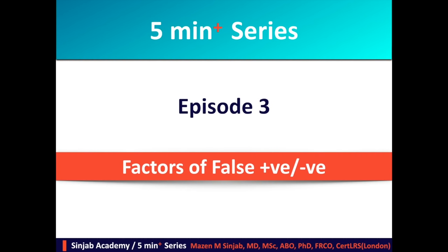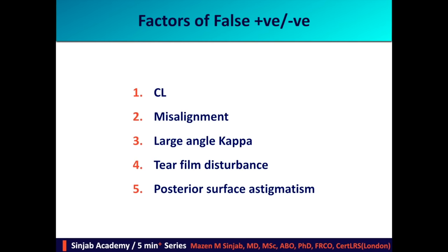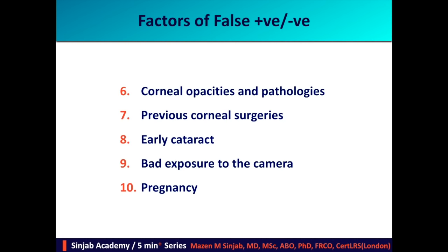However, before you do the same, you have to listen very carefully to this video and you have to know the factors of false positives and false negatives in corneal tomography. The factors are: contact lenses, misalignment, large angle kappa, tear film disturbance, posterior surface astigmatism, corneal opacities and pathologies, previous corneal surgeries, early cataract, bad exposure to the camera, and pregnancy.